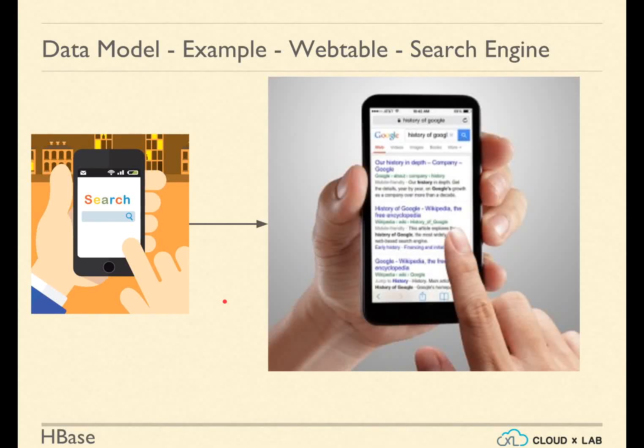Let us take an example of the data store of the Google search engine. A search engine displays the ordered results relevant to a user's search query. Are these search results queried from the website in real time or from the database of Google? Google keeps downloading websites and parsing and storing the data found on them. This process of downloading websites is called crawling, and the tool is generally referred to as a crawler.